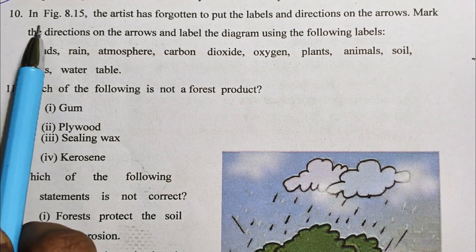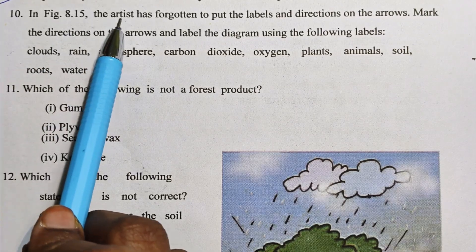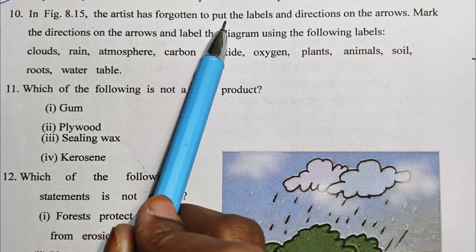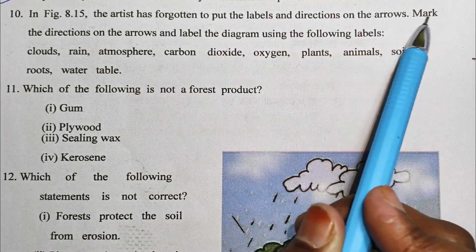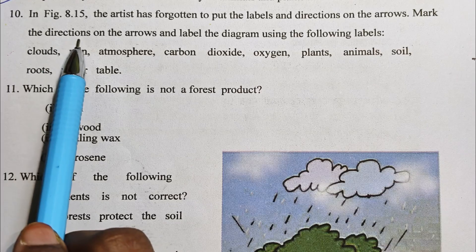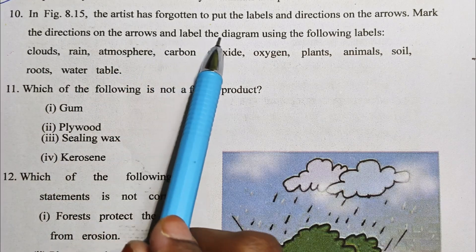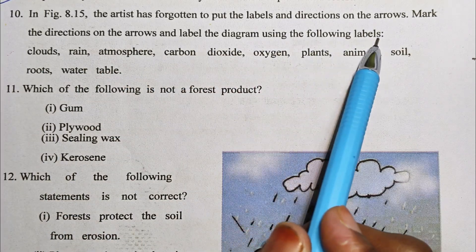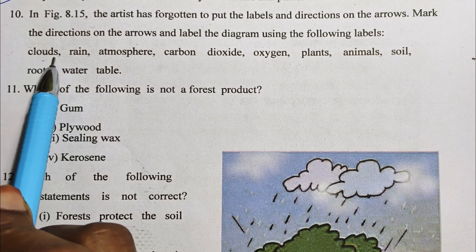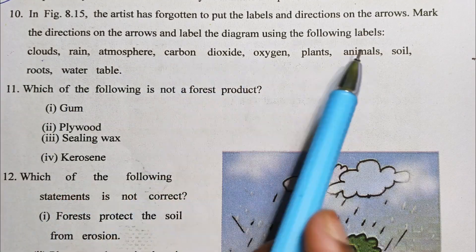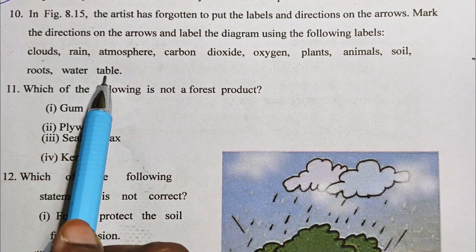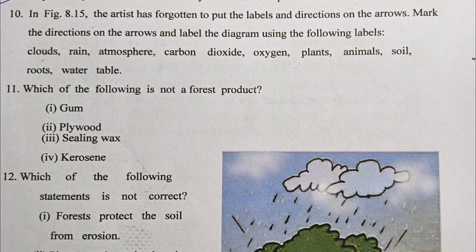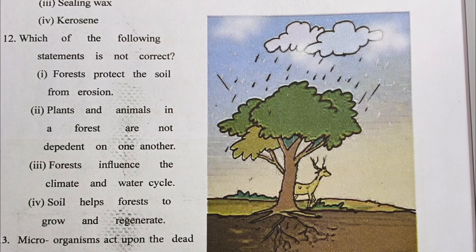Question number 10: In figure 8.15, the artist has forgotten to put the labels and directions of the arrow marks. Mark the direction on the arrows and label the diagram using the following labels: clouds, rain, atmosphere, carbon dioxide, oxygen, plants, animal, soil, roots, water table.